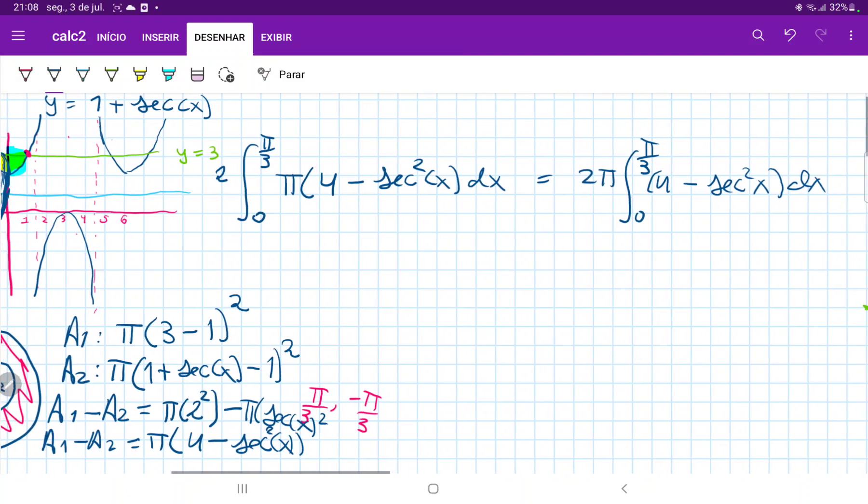And now all we have to do is integrate it. So the integral of 4 is just 4x. So this is equal to 2 pi times 4x minus the integral of secant squared. We have to think of the antiderivative. The derivative of tangent is secant squared x, therefore the integral of secant squared x is tangent. So minus tangent of x evaluated from 0 to pi over 3.